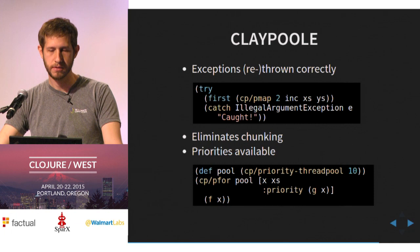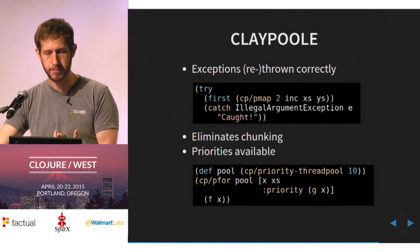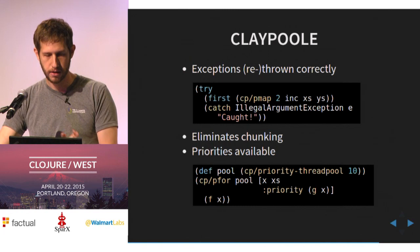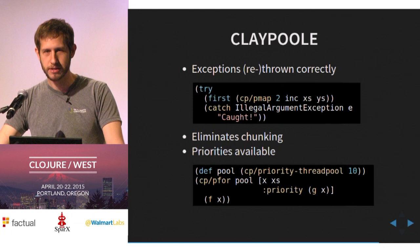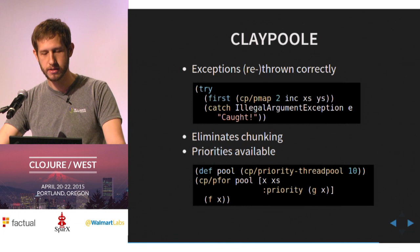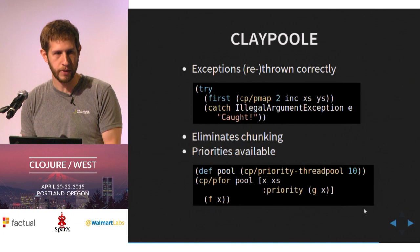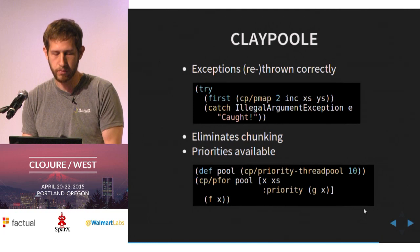A few minor bonuses: exceptions get rethrown correctly — if you encounter an exception in your PMAP, you'll get that same exact exception on the outside. Claypool also eliminates chunking — if you know what chunking is, you don't have to worry about it. And as a bonus, you can have priorities on your tasks. You create a separate priority thread pool, give each task a priority, and they'll be done in roughly that order. It can only sort between tasks that are already realized — so if getting a lazy or streaming sequence, it will run the highest available priority when it has the chance.